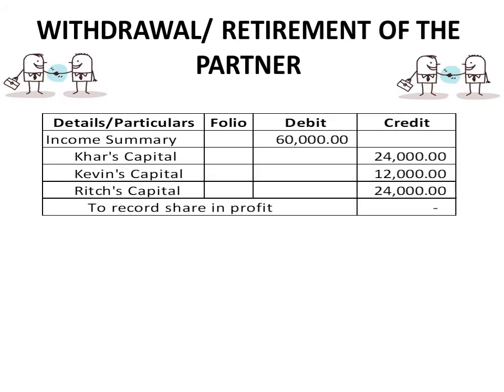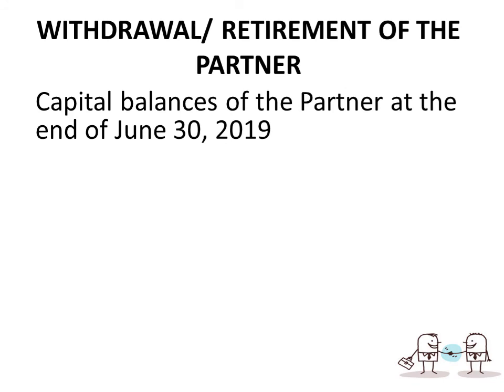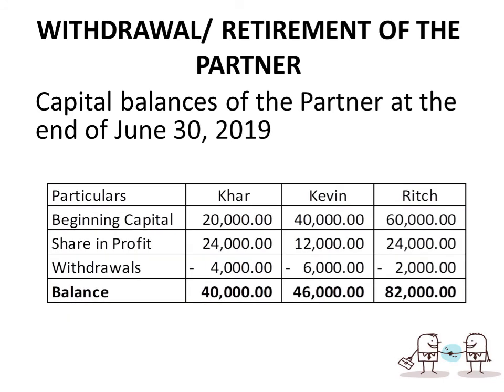Journal entries: debit Income Summary $60,000, credit Carr's Capital $24,000, Kevin's Capital $12,000, Rich's Capital $24,000. For drawings: debit Carr's Capital $4,000, Kevin's Capital $6,000, Rich's Capital $2,000, credit Cash $12,000. Capital balances as of June 30, 2019 — Carr: $20,000 + $24,000 − $4,000 = $40,000; Kevin: $46,000; Rich: $82,000.